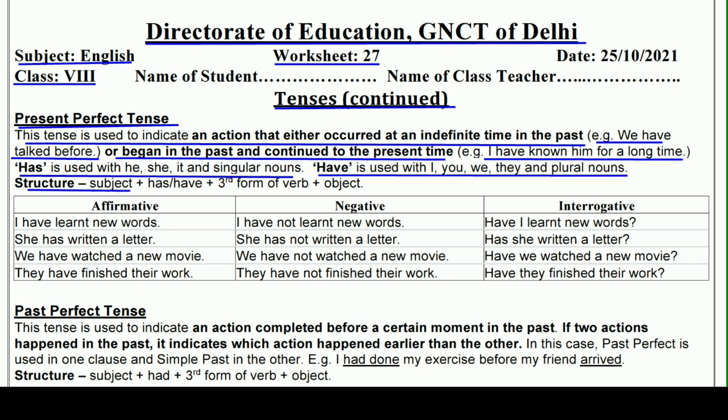Structure क्या रहेगा: subject, फिर has या have, और साथ में ध्यान रखना है — third form of verb का use करते हैं। हमने verb की तीन forms देखी हैं। Present Perfect, Past Perfect या Future Perfect — तीनों में third form of verb ही use करेंगे, और उसके बाद object।